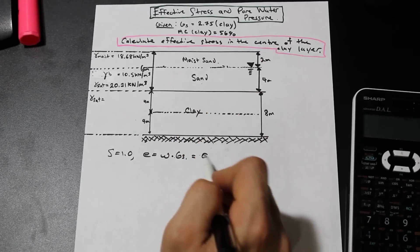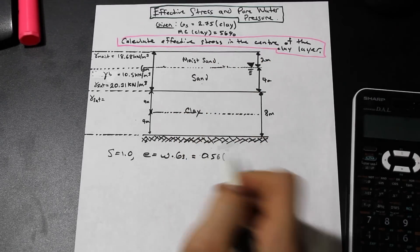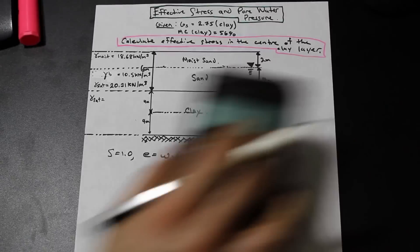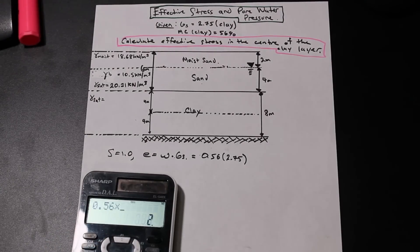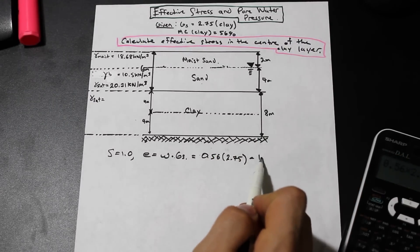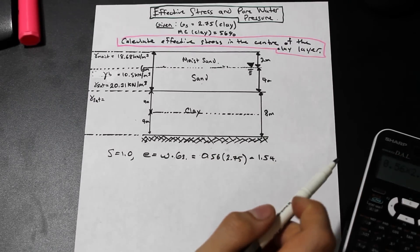So we have the moisture content, it's 0.56, and we have the specific gravity, it's 2.75, and that should give us 1.54. So we have a void ratio of 1.54 in the clay.